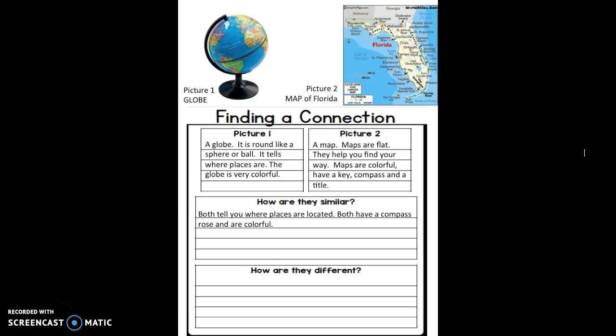Well, we know both tell you where places are located. We know both have a compass rose and are colorful. How are they different? We're talking about globes, and we said they're shaped like a sphere and they are of the entire world.